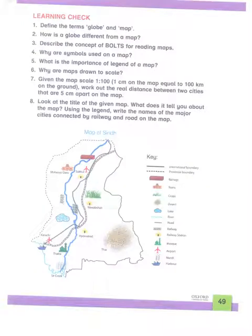The next question is: describe the concept of BOLTS for reading maps. BOLTS means Border, Orientation, Legend, Title, and Scale.